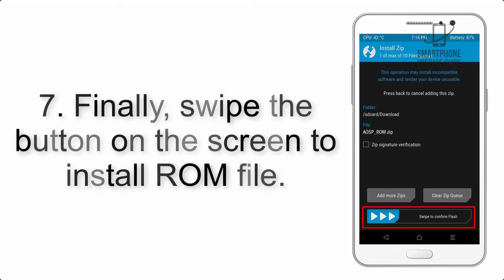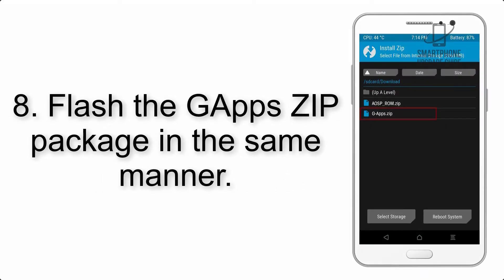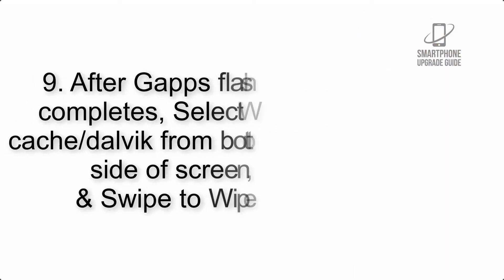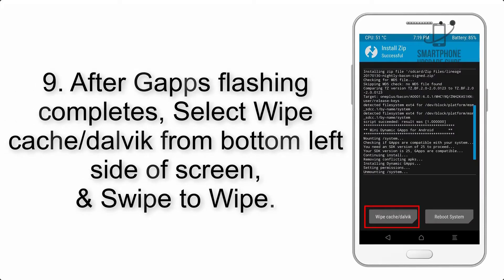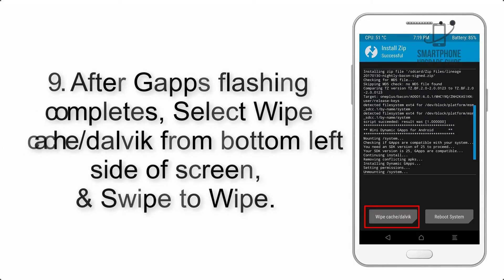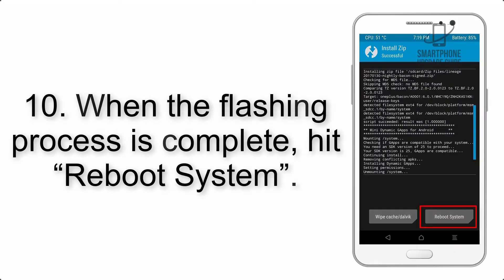Step 7: swipe the button on the screen to install the ROM file. Step 8: flash the GApps zip package in the same manner. Step 9: after GApps flashing completes, select Wipe Cache and Dalvik from the bottom left side of the screen and swipe to wipe.